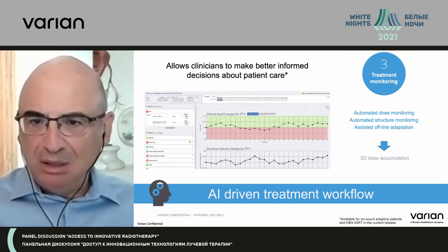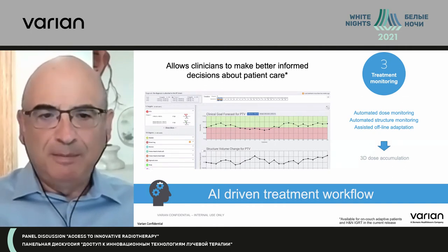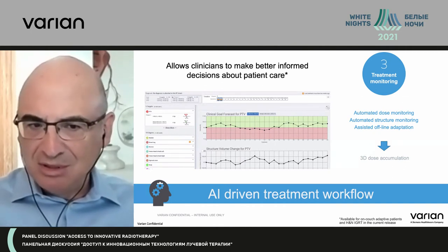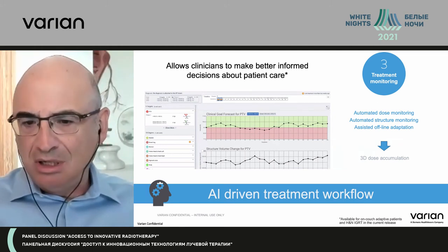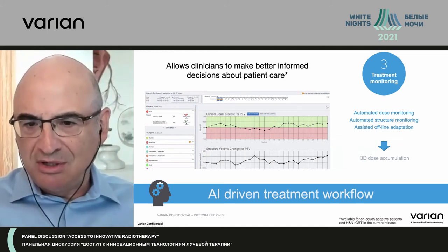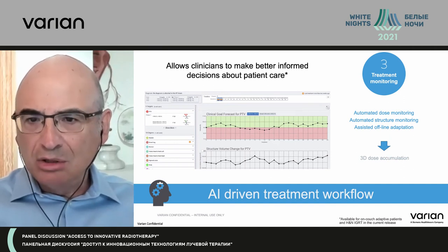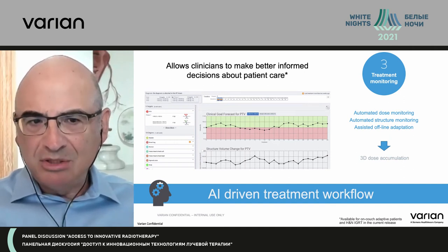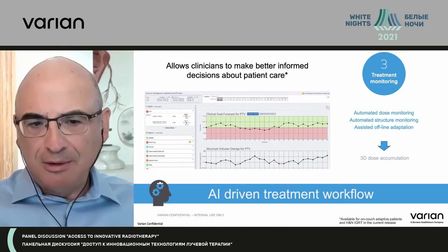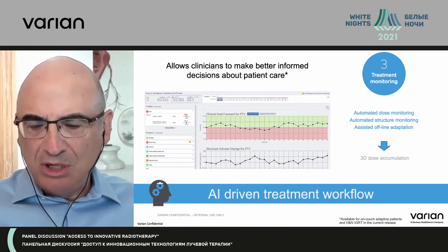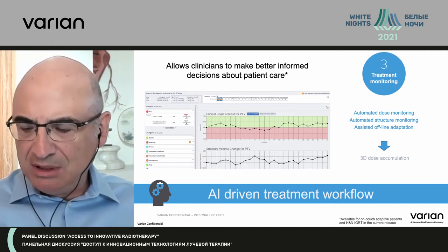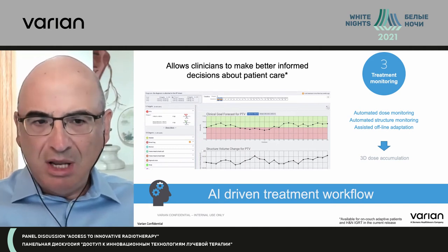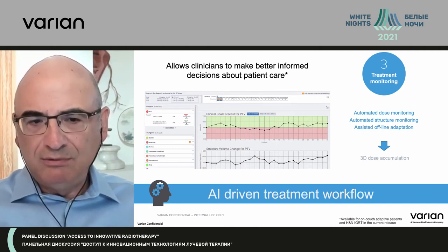In between fractions, the system will do a 3D dose accumulation. You can see trends — if you're adapting or not adapting, you can see trends in organs at risk or targets, whether things are getting hot or cold. You can also do an offline adaptation if needed, in the same way you would for online adaptation. It's a very user-friendly and efficient way of doing adaptation.